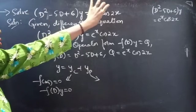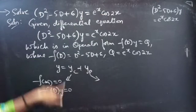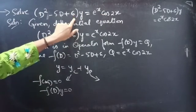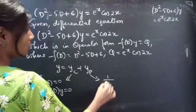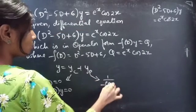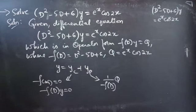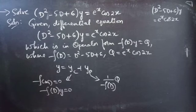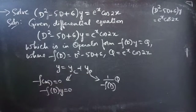We will find the complementary function using the roots of the auxiliary equation of the homogeneous equation. By putting the right-hand side to 0, we get f(D)·y = 0, which is the homogeneous equation. We will find yp using 1/f(D) · Q. So firstly, let's find roots to write the complementary function, and later we will find yp.